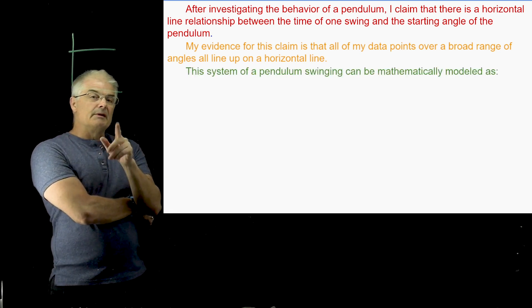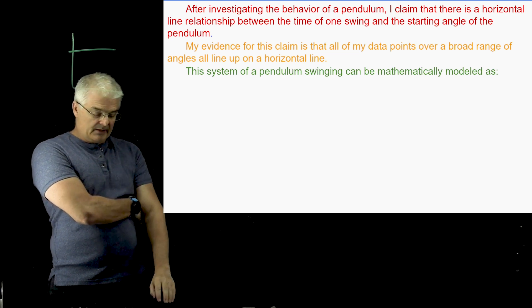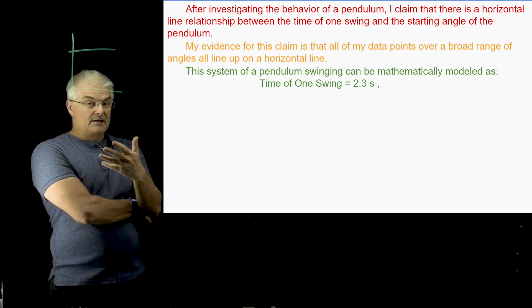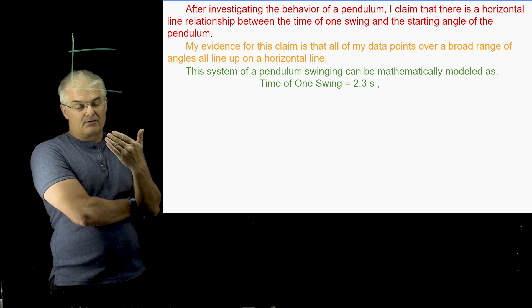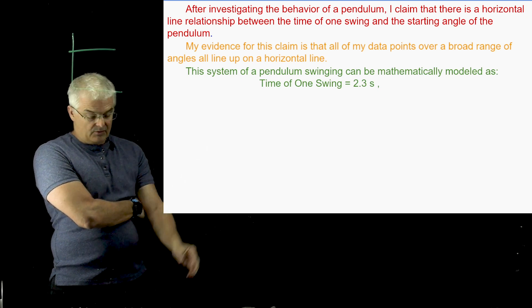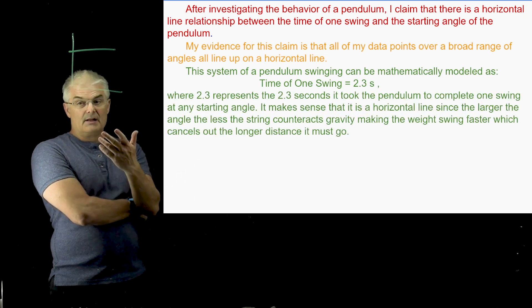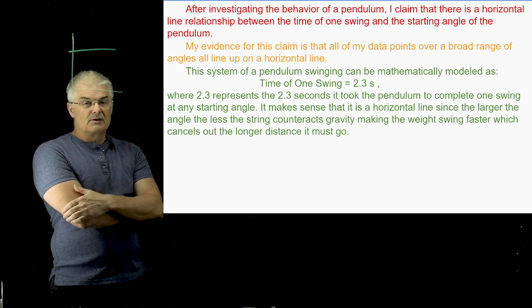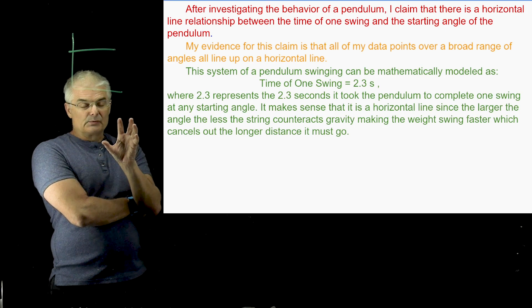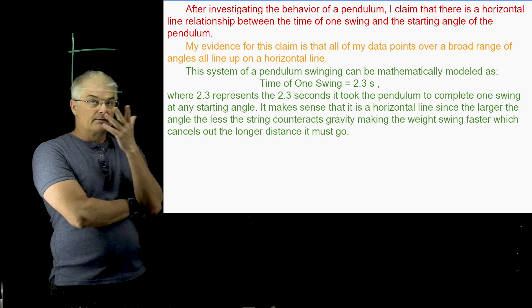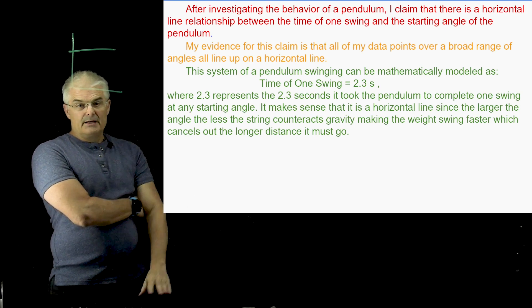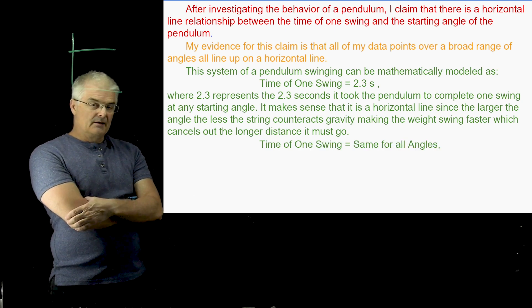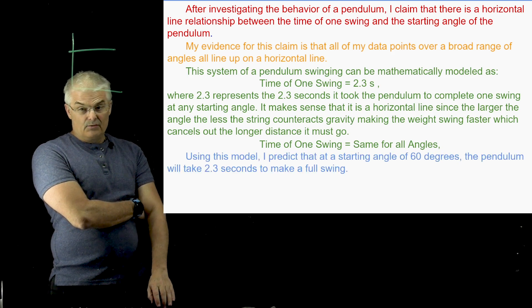The system of the pendulum swinging can be mathematically modeled as, so now we're in the mathematical description, as time of one swing is 2.3 seconds. And you might want to write it out. In this case, it's just like y equals 2.3, or whatever the number was from your swing. Where 2.3 represents 2.3 seconds it took the pendulum to complete one swing. And then see how it's happening, or it's being written out in words. That's what we talked about just a minute ago. And the time of one swing equals the same for all angles. That's really the mathematical expression in words.